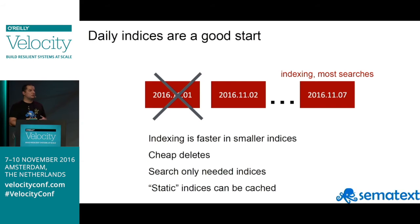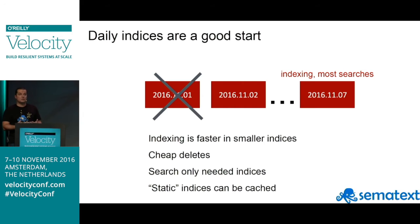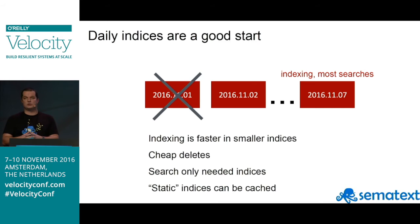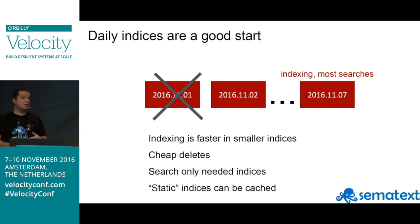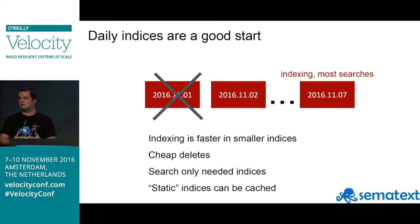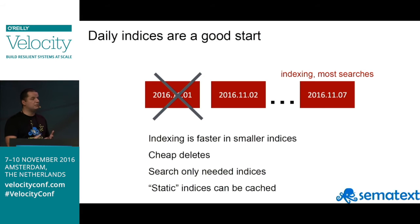The idea is to allow Elasticsearch to create an index for the current day and just push the data there. Why does it work better? Those indices will be smaller compared to one large index. You can have hundreds of daily indices — 365 for one year's worth of data — and choosing a smaller piece is more performant. Indexing is faster because we avoid expensive merges. And for deletion, instead of deleting by query, we can just drop the whole index, which is simply a file system delete without any Elasticsearch internals needing to be updated.